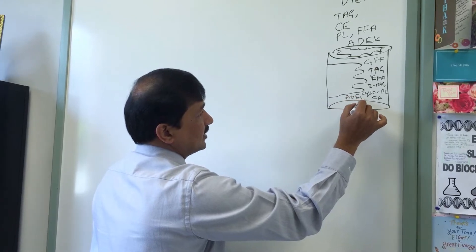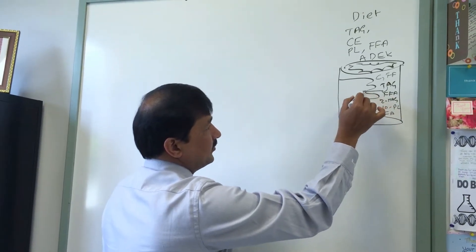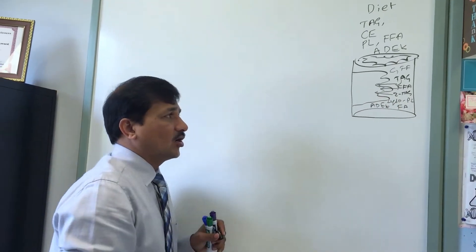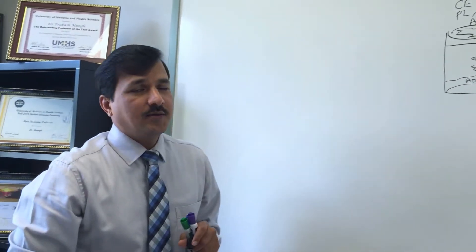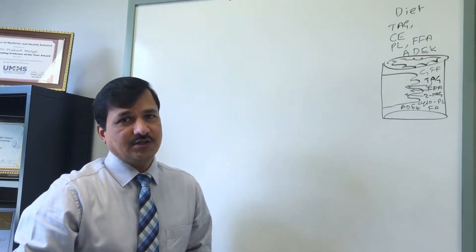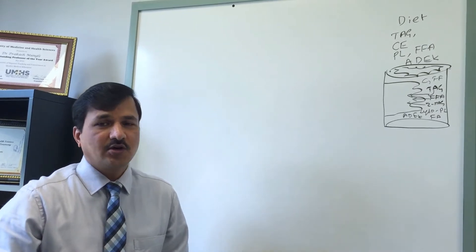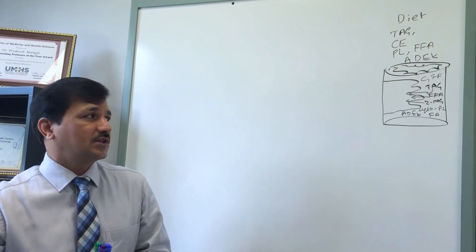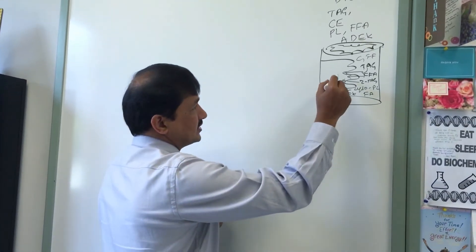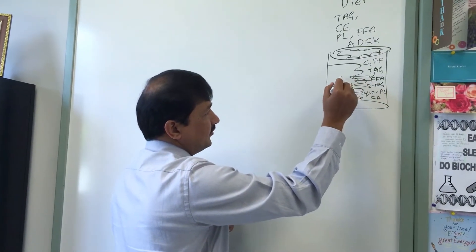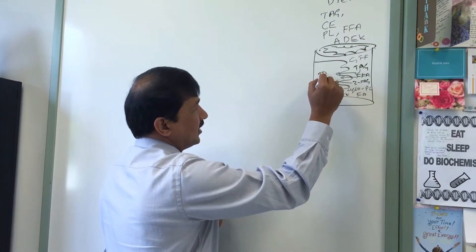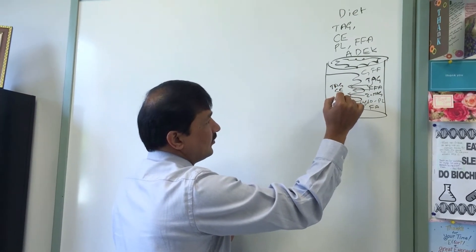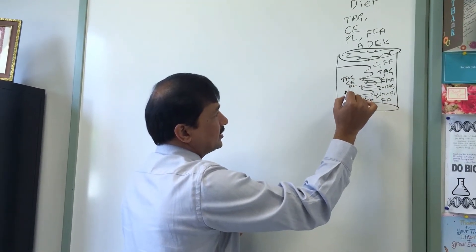Phospholipid is digested into lysophospholipid and fatty acid. Vitamins A, D, E, and K undergo simple diffusion. An important point: cholesterol absorption is inefficient — only 55% of cholesterol is absorbed, while 45% is lost in the feces.